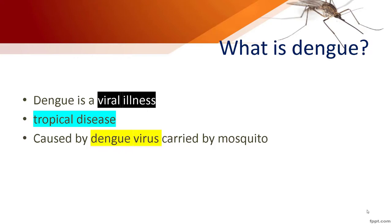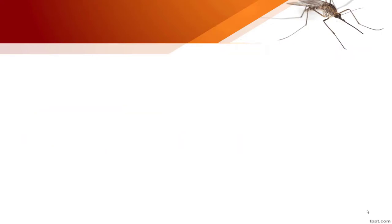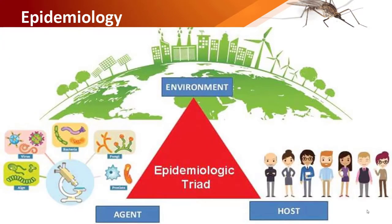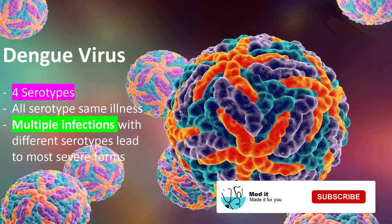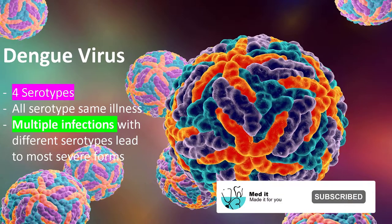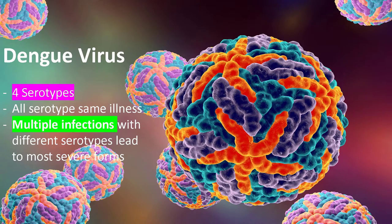This disease is named after the virus that causes it — the dengue virus. It's not the mosquito that actually causes the disease, but the virus. As you can see in this epidemiological triad, there are three factors that play an important role: the agent, the host, and the environment. The agent is the dengue virus, which is of four subtypes.